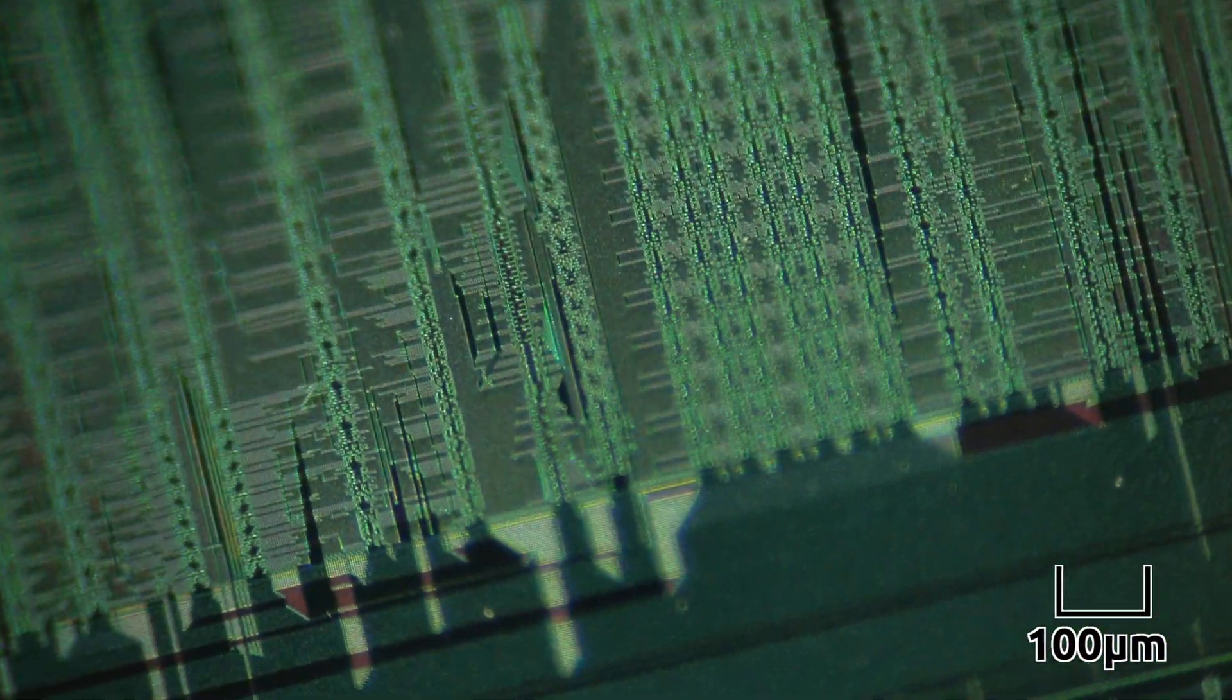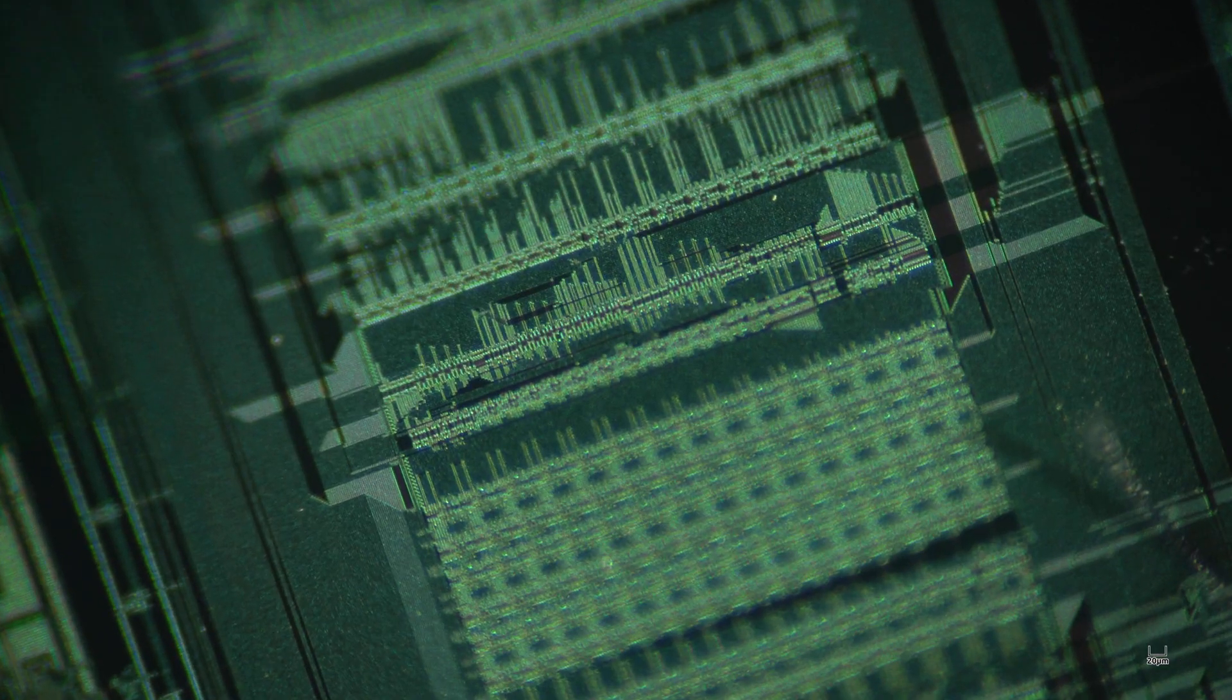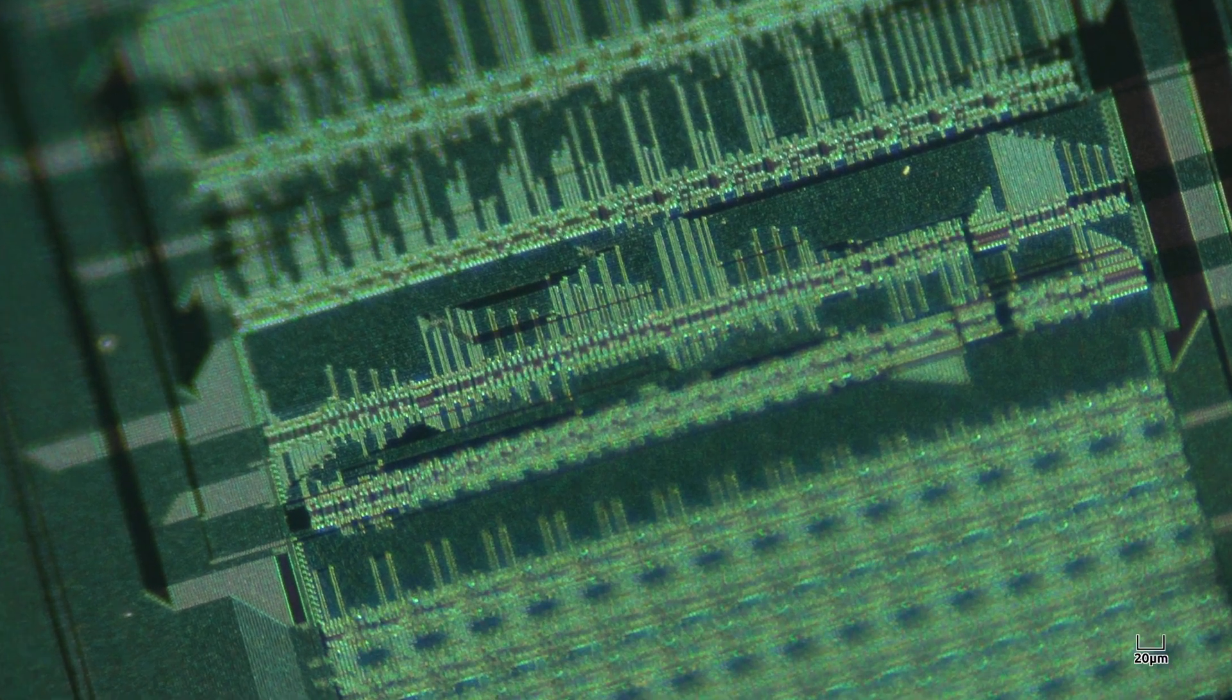This busy looking area with crisscrossed lines most likely perform some kind of computation. The smallest features in this chip are barely resolvable in this image.